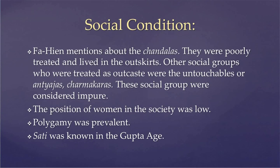Fahian also mentions the Chandalas, a social group treated very harshly who lived in the outskirts. Other out-caste social groups included the untouchables and the Chalmarakars, considered very impure. The position of women in society was low, considered in the same category as Shudras. Polygamy was prevalent, and Gupta kings and feudatory lords engaged in it. Sati was known in the Gupta age; the Mandasaur stone inscription of Kumara Gupta I refers to the practice of Sati.